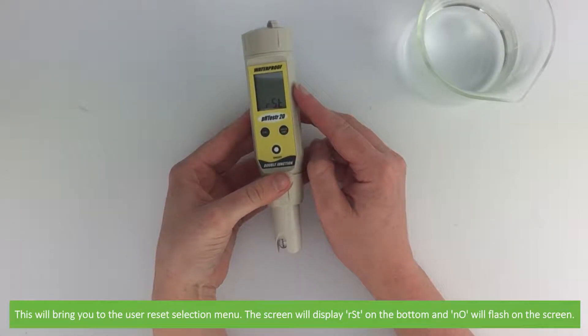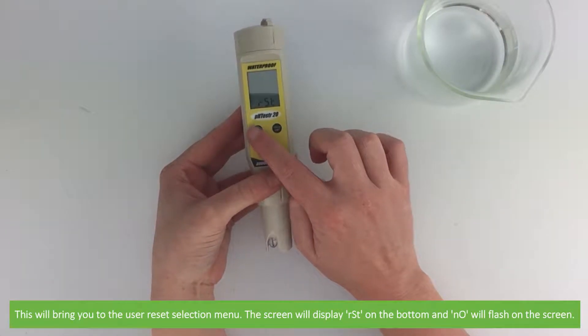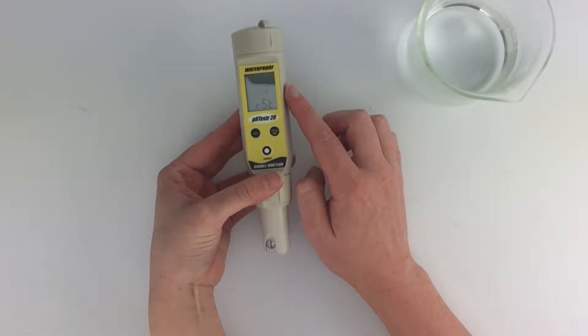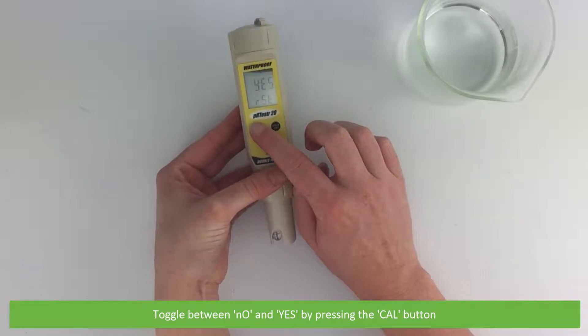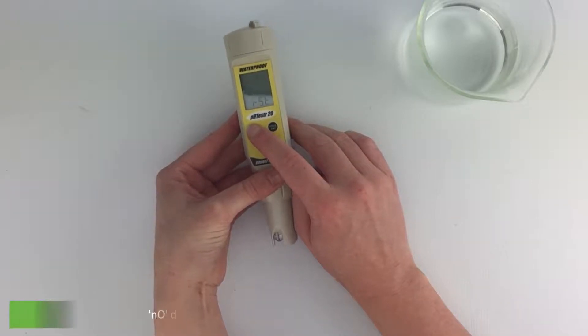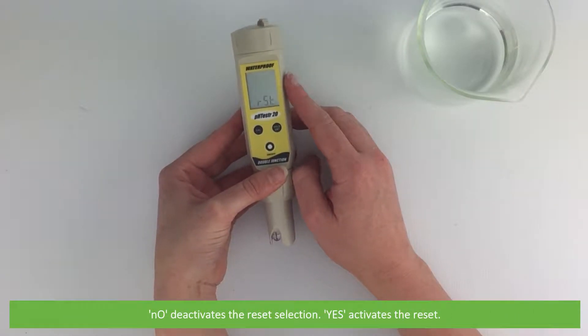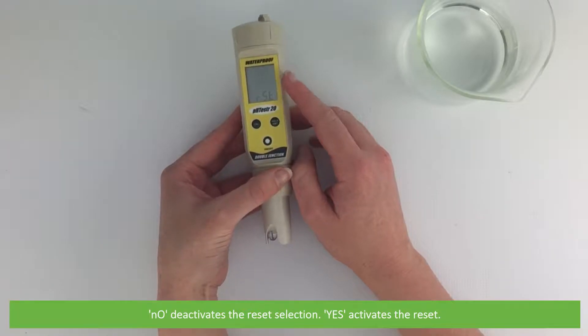The screen will display RST on the bottom and no will flash up on the screen. You can toggle between no and yes options by pressing the cal button. No deactivates the reset selection while selecting yes activates the reset.